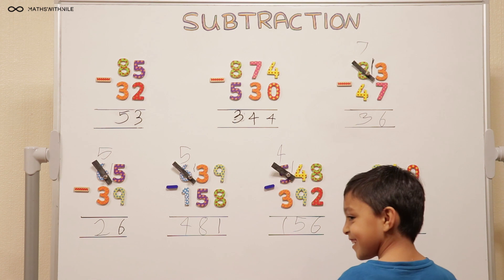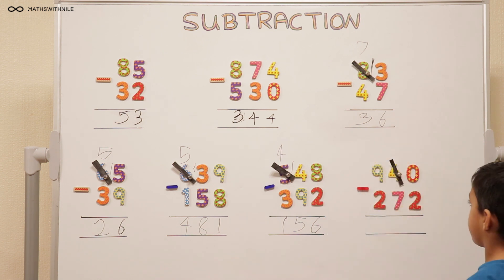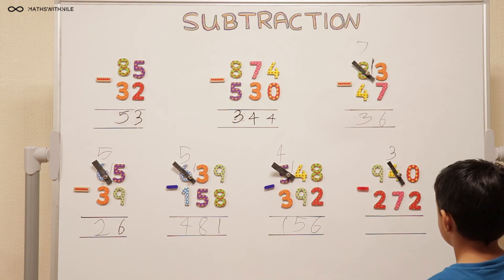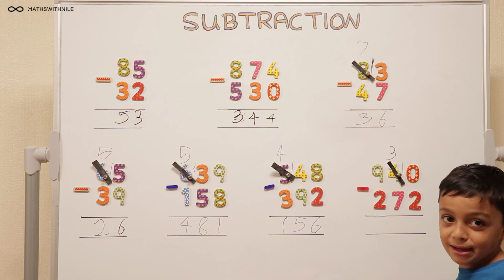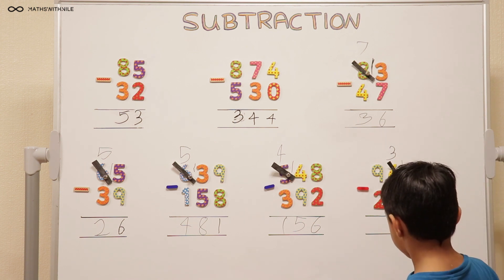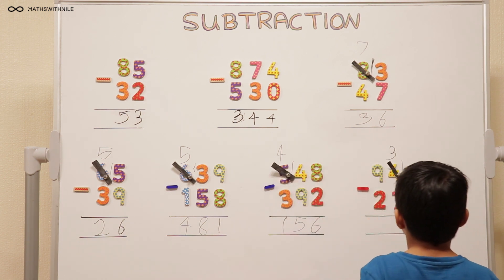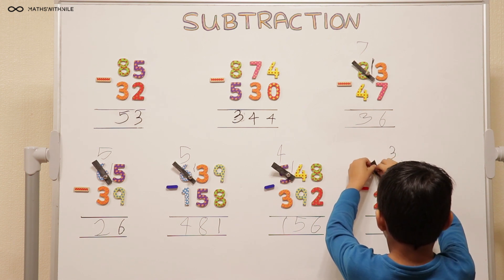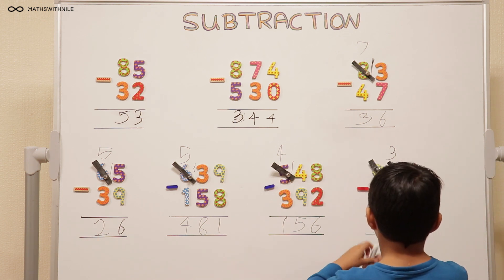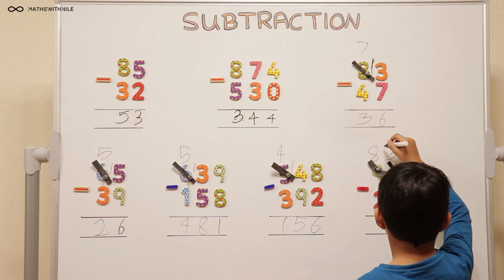I'll cross out the 4. Then we'll do 3. And we put that there. So 10 take away 2 equals 8. Good. 3 take away 7 we can't do. I'll get another magnet. We're going to be left with 8. So you took 1 from the 9 and left with 8. And then we put a 1 here next to the number.